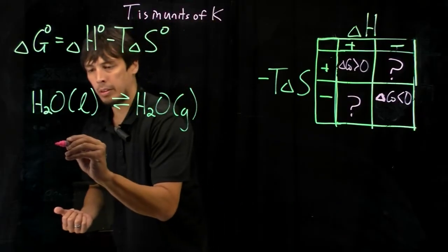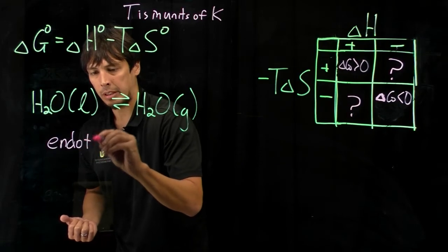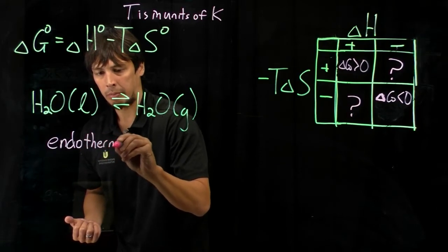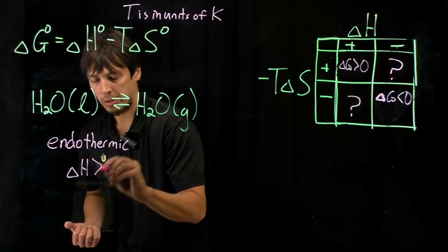And so we know then that since we're adding heat energy, that this is going to be endothermic, which means delta H is greater than zero.